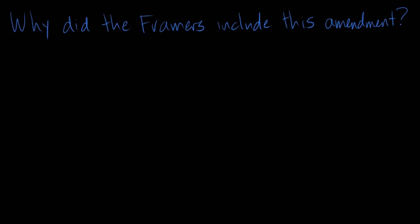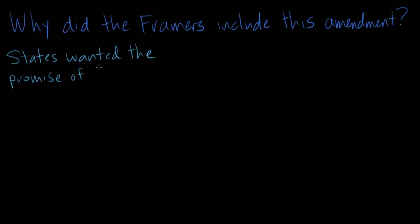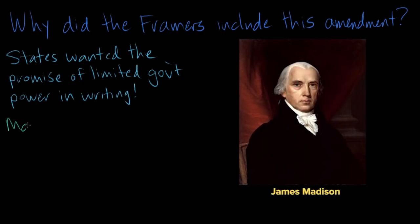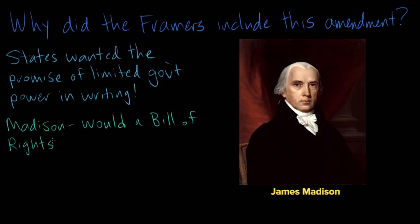Why did the framers include this amendment in the first place? The Ninth Amendment, like the rest of the Bill of Rights, was added at the insistence of the states. Although the advocates of the proposed Constitution had claimed that the national government would have only limited enumerated power, the state ratifying conventions wanted that promise put in writing. Originally, the Constitution didn't contain a Bill of Rights because James Madison said a Bill of Rights would be unnecessary or dangerous. Unnecessary because the Constitution itself was a Bill of Rights — it only granted Congress limited powers, and therefore Congress had no power to infringe free speech, for example, or religious liberty.